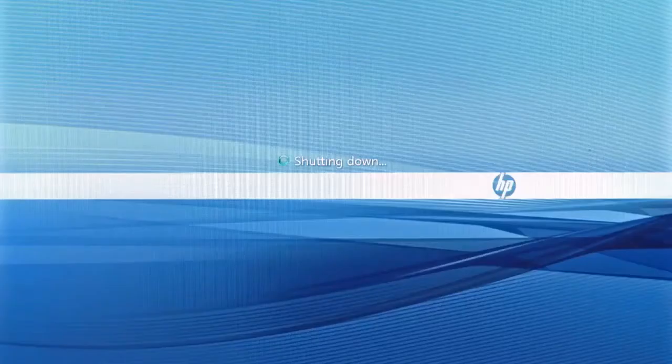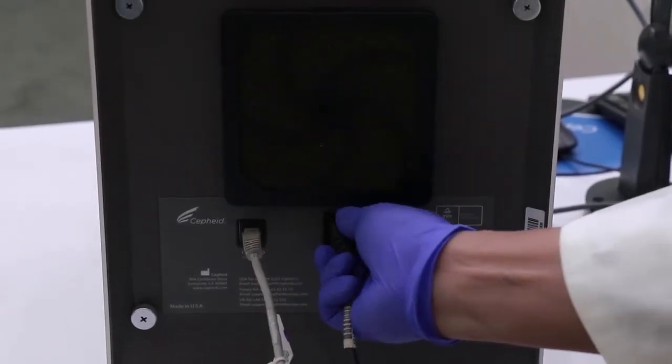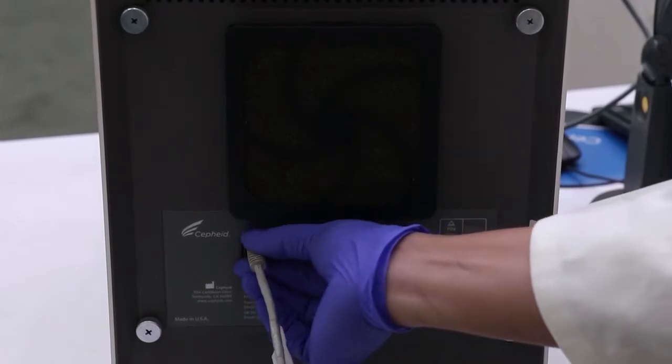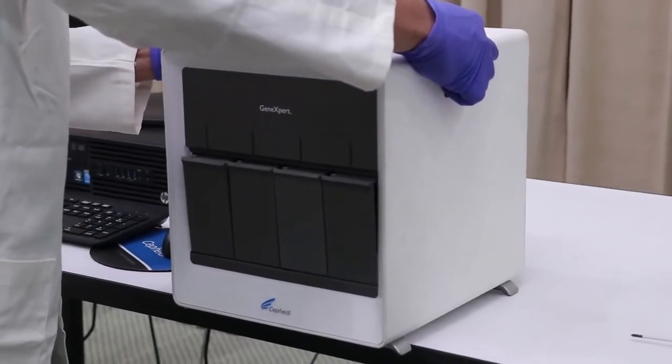After that, shut down the computer, switch off the GX machine, and unplug the power cable and network cable. Place the machine on the edge of the table carefully.